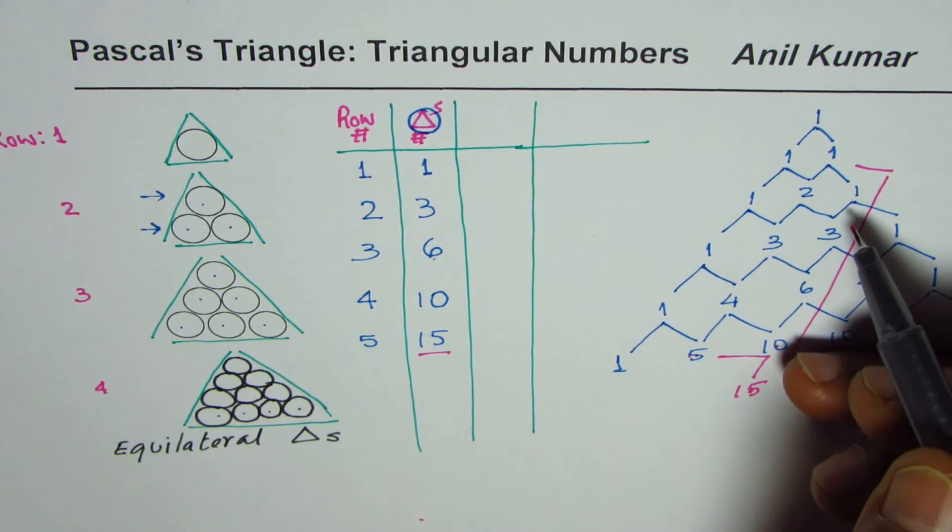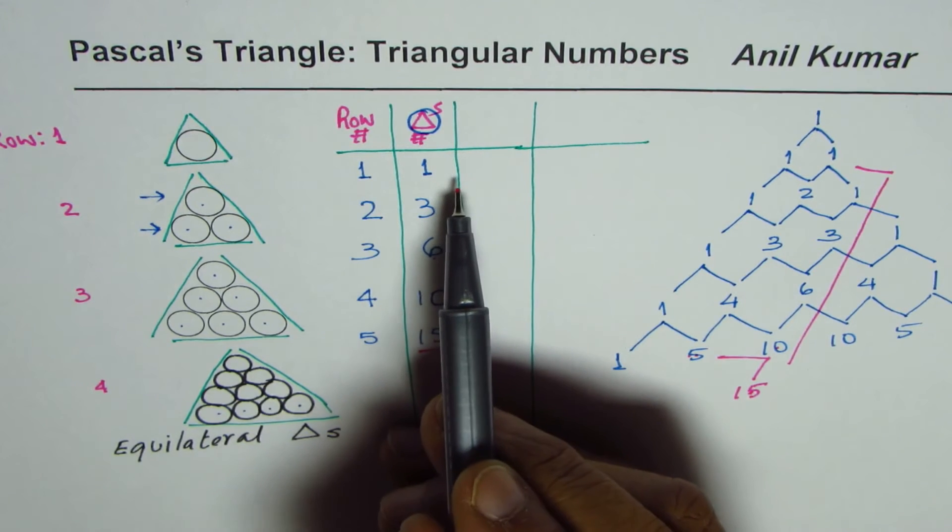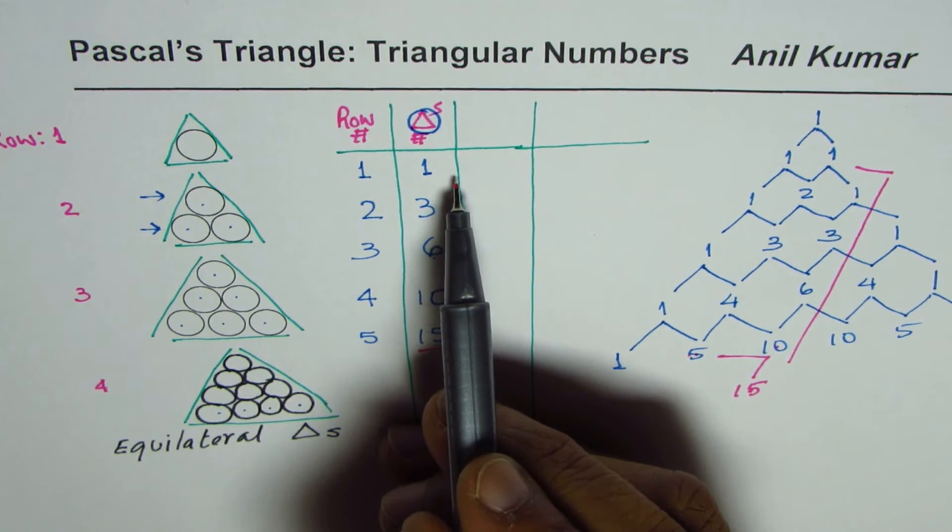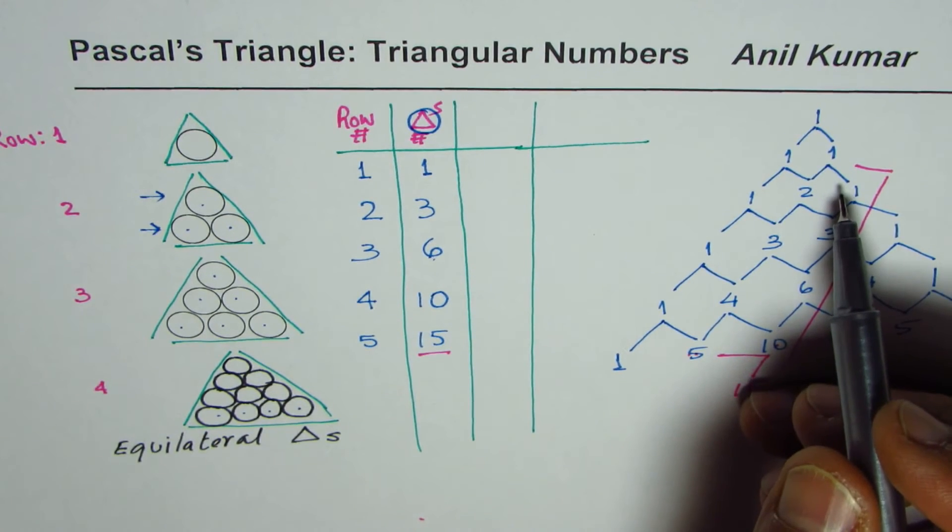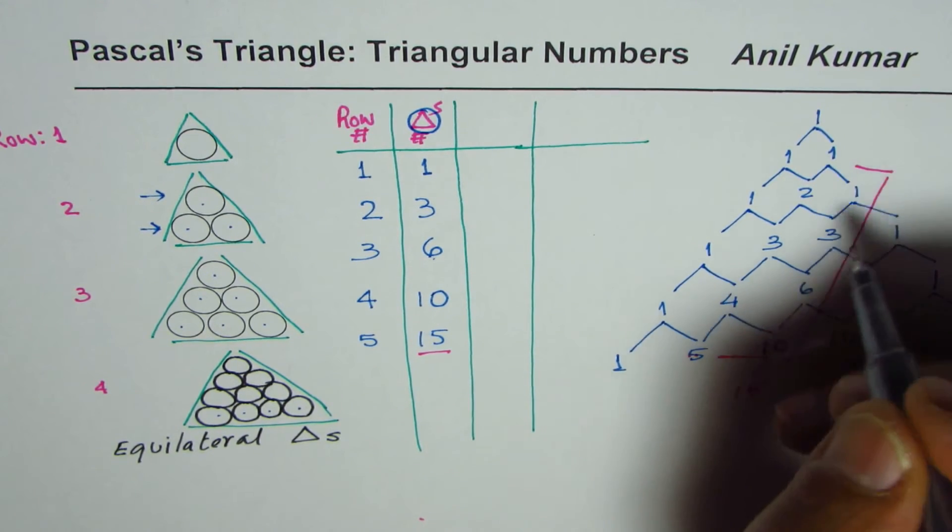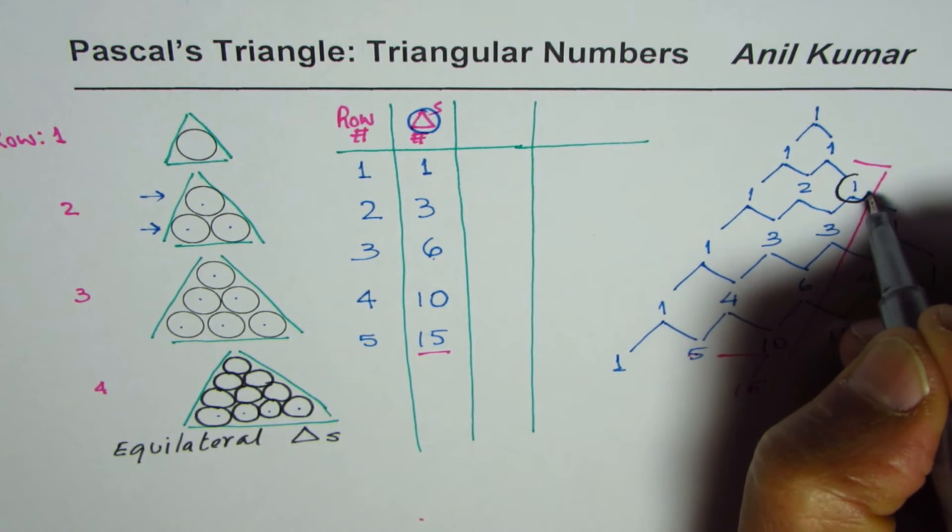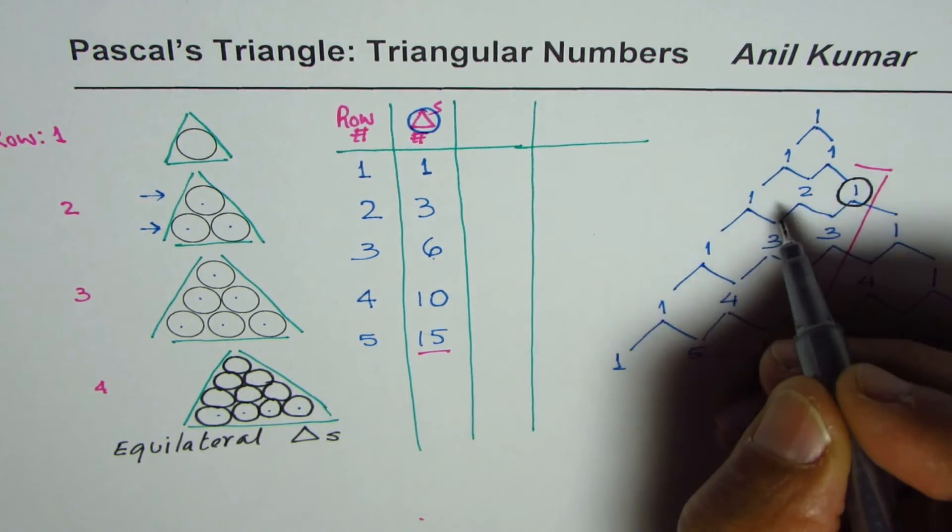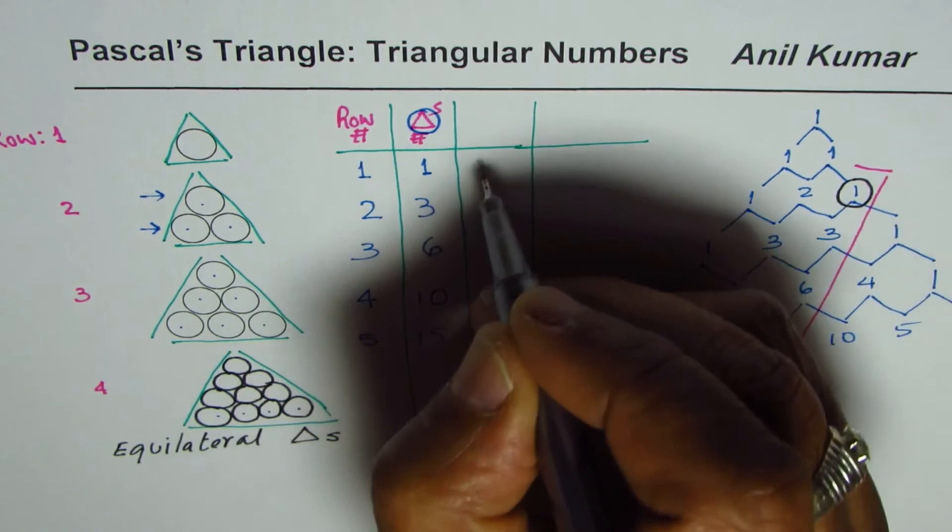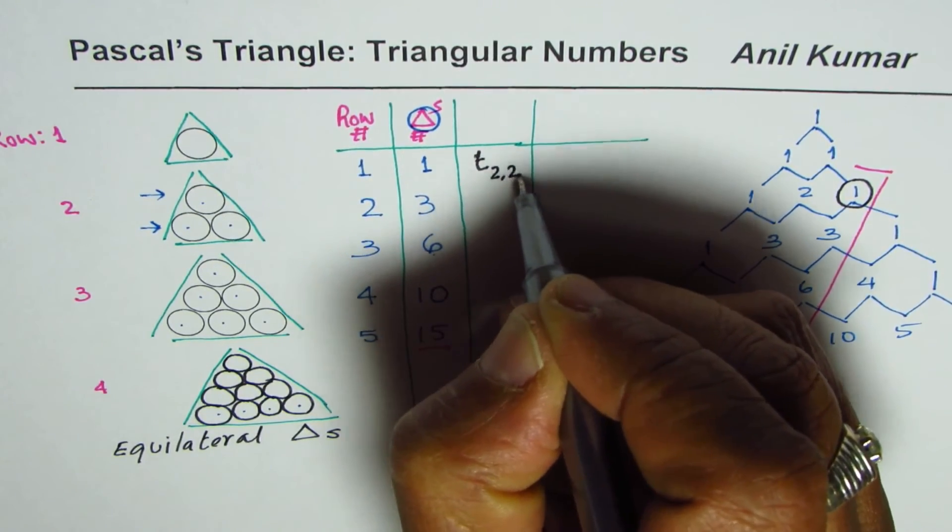So what do you notice here is that these numbers correspond to the terms within Pascal's triangle. So the position here, we can write for each the position in terms of the term number using Pascal's notation. So here, we are saying this number, it is row number is two for us. And zero, one, two. So it is T_2,2.